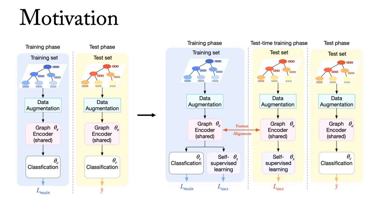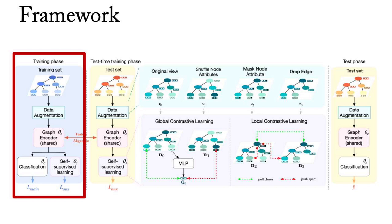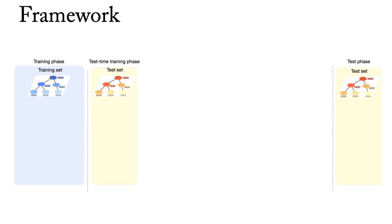Here is our framework. The process comprises three stages: the training phase, test-time training phase, and test phase. Assuming a difference in distribution between the training and test sets, we insert test-time training into the training-test paradigm.